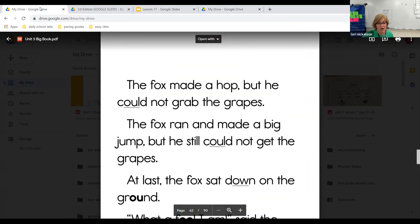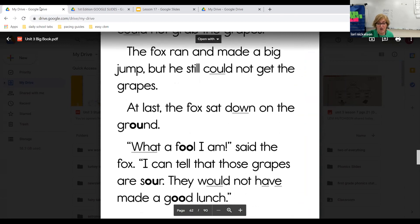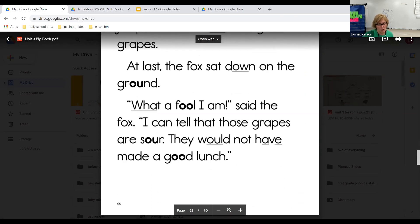The fox made a hop, but he could not grab the grapes. The fox ran and made a big jump, but he still could not get the grapes. At last the fox sat down on the ground. What a fool I am, said the fox. I can tell that those grapes are sour. They would not have made a good lunch.